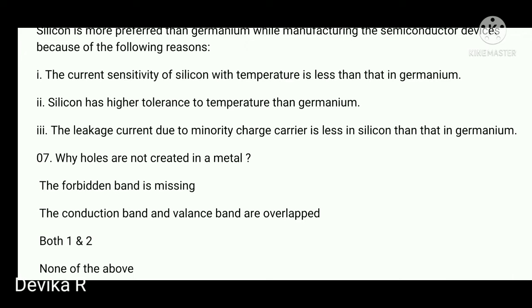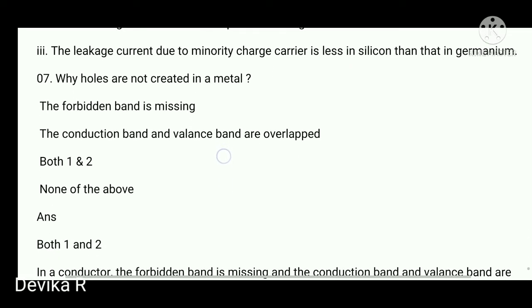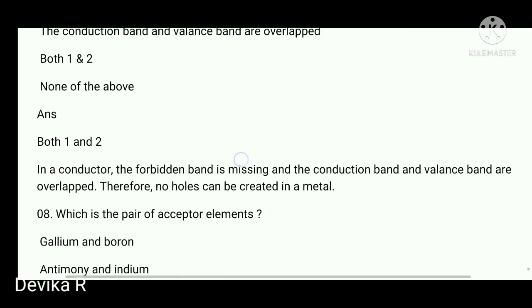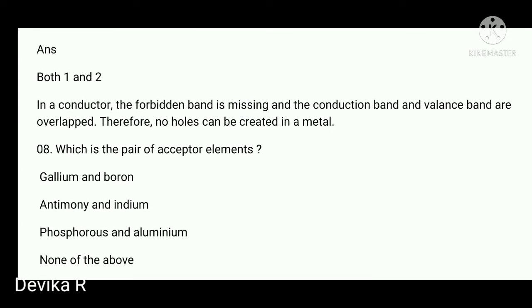Next question: why are holes not created in a metal? Because the conduction band and valence band are overlapped, and the forbidden band is missing. Both of these reasons apply, so 'both one and two' is the right answer — the metal does not have any holes.